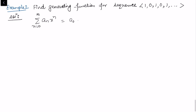Expanding it: a₀ + a₁x + a₂x² + a₃x³ + a₄x⁴ + ... What is given? a₀ = 1, a₁ = 0, a₂ = 1, alternating.